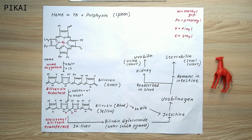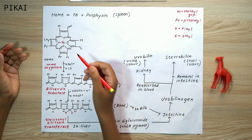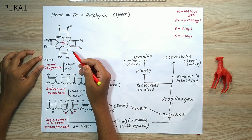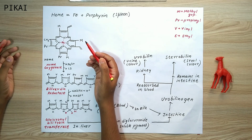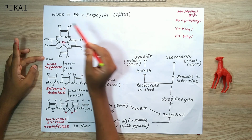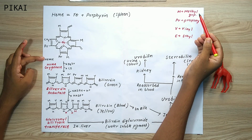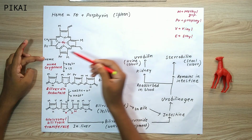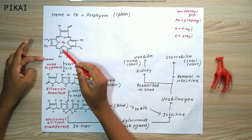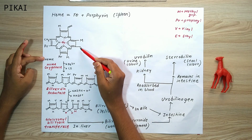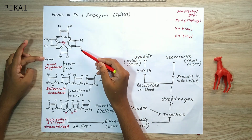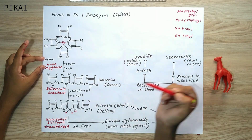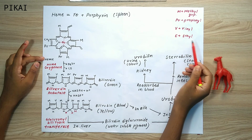Heme is the non-proteinaceous portion of hemoglobin. This non-protein part is composed of a porphyrin ring and iron in its Fe2+ state. In the heme structure, M denotes the methyl group, PR denotes the propionyl group, V denotes the vinyl group, and E denotes the ethyl group seen in later structures.